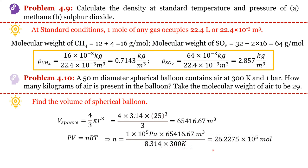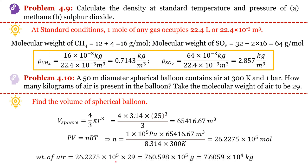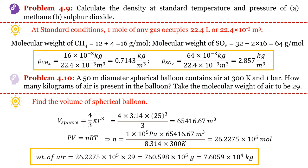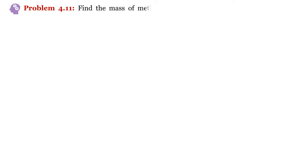The number of moles will come out to this value. Now we need to find the weight of air. Since the molecular weight of air is known, the weight of air will equal moles of air multiplied by its molecular weight. This will come out in grams, so convert grams to kg to get the weight of air.